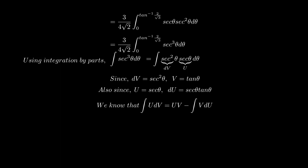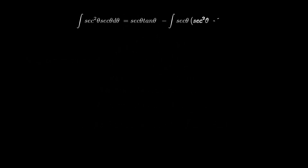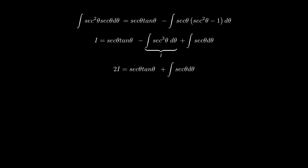Substituting in, the integral of sec cubed θ equals sec θ tan θ minus the integral of sec θ tan squared θ. Since tan squared θ equals sec squared θ minus 1, this expands the integral of sec squared θ. Denoting the integral of sec cubed θ as I, we bring sec cubed θ to the left-hand side to get 2I equals sec θ tan θ plus the integral of sec θ dθ. Therefore I equals one half sec θ tan θ plus one half the integral of sec θ.